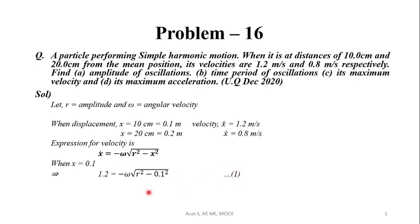Next, we substitute x = 0.2 m: 0.8 = ω√(r² − 0.2²). Let this be equation number 2.